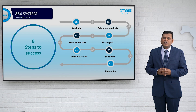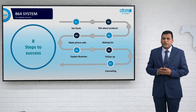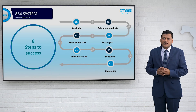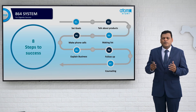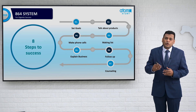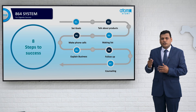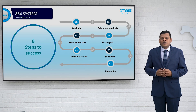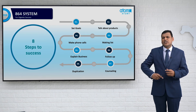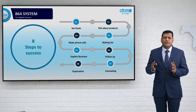The next step is counseling, which is one of the most important steps. For counseling, you can watch our MD's video on 3P — product, profile, and plan. All three things will automatically convince them, but you have to do a counseling session with them. The last step mentioned by Mr. Hungil Park sir is duplication — repeating these seven steps again and again every day, every week, every month.